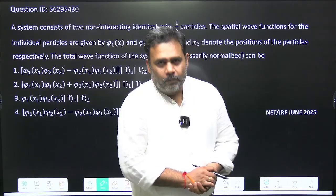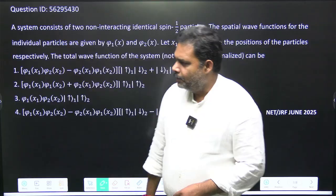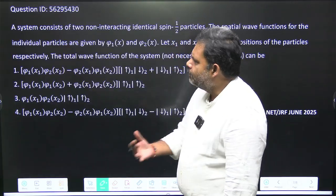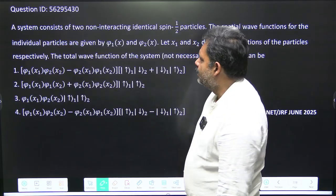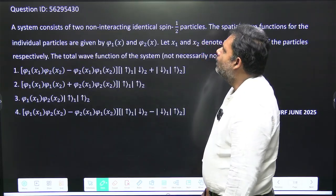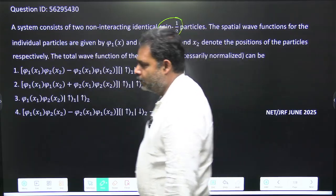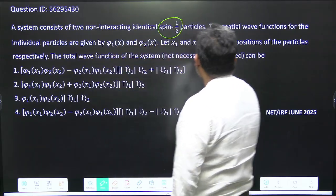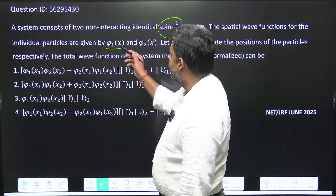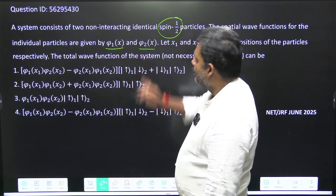Hello friends. Let us try to solve one more problem, and this is from quantum mechanics — specifically from identical particles. This is a very conceptual, definition-based problem. We have a system consisting of two non-interacting identical spin-half particles. The spatial wave function for the individual particles is phi1(x) for the first particle and phi2(x) for the second particle.